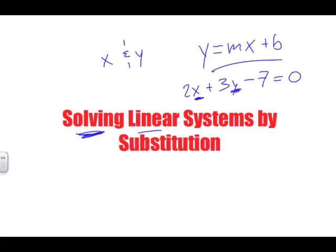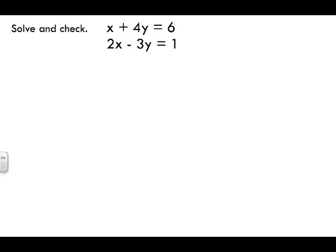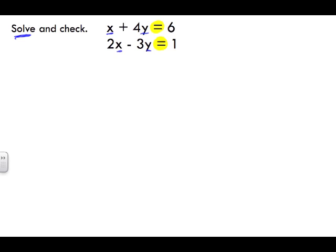Let's look at our first sample problem. The question says solve and check. When solving, there are two things to look for: variables — your letters — and equal signs. You're always going to find equal signs because we need them to solve. Variables and equal signs are essential for solving algebraic expressions.